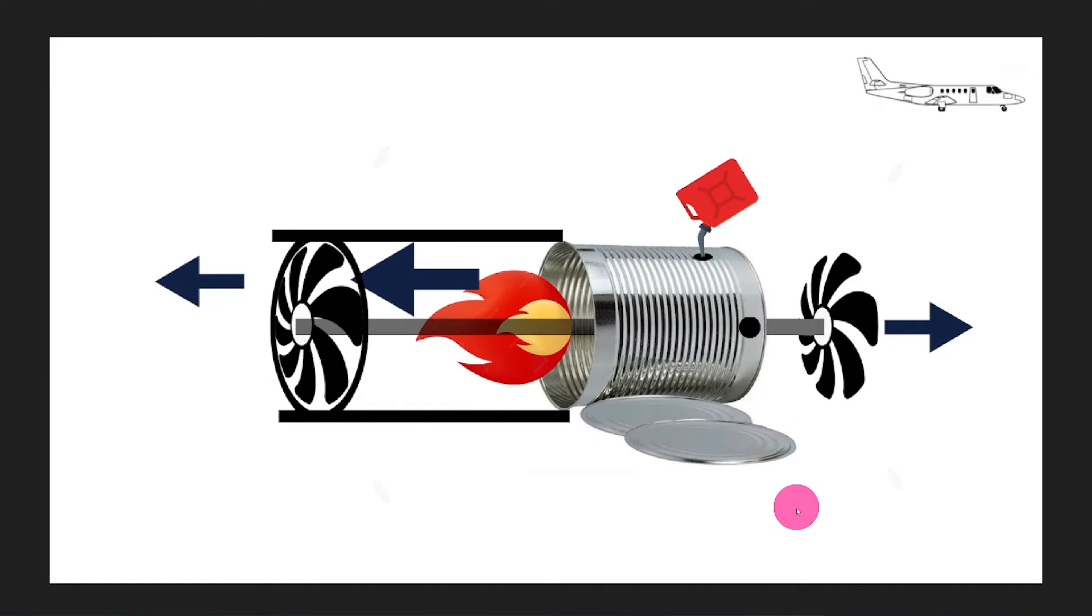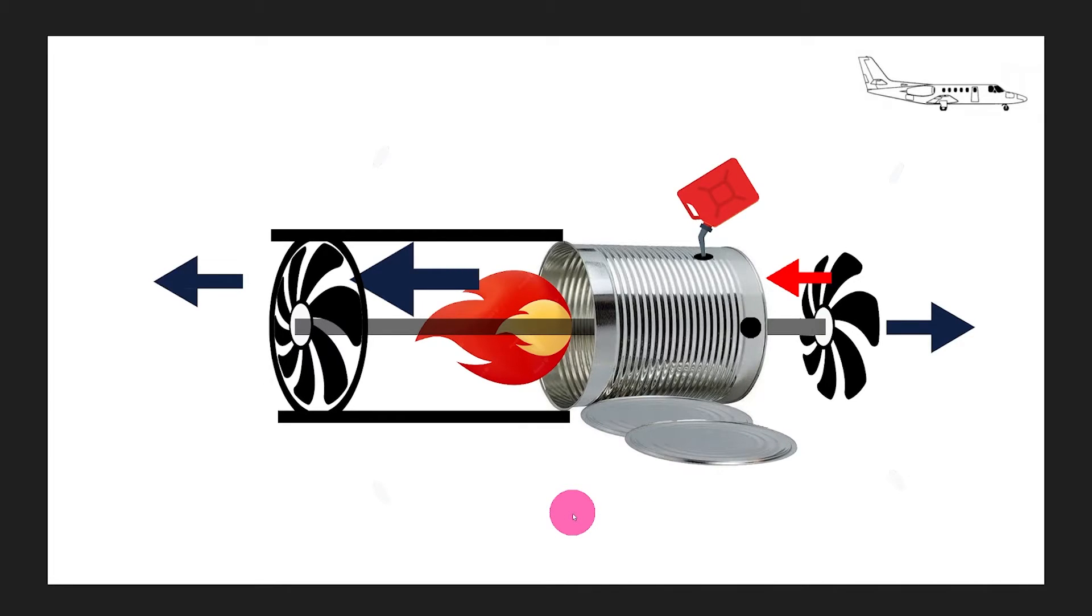Now we want to open the front of the tin can to let more fresh air in. Now the fan in the front will push air into the can providing a large supply of fresh air so we can have a much bigger fire and burn more fuel. All good things if we want more power.